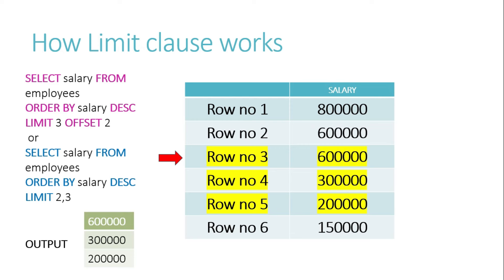Let's first understand how the LIMIT clause works. The query SELECT salary FROM employees ORDER BY salary DESC fetches salaries in descending order, with the highest at the top. Then LIMIT 3 means it will fetch 3 records, and OFFSET 2 means it starts calculating rows after row number 2 — so it takes rows 3, 4, and 5 — giving us 6 lakhs, 3 lakhs, and 2 lakhs.